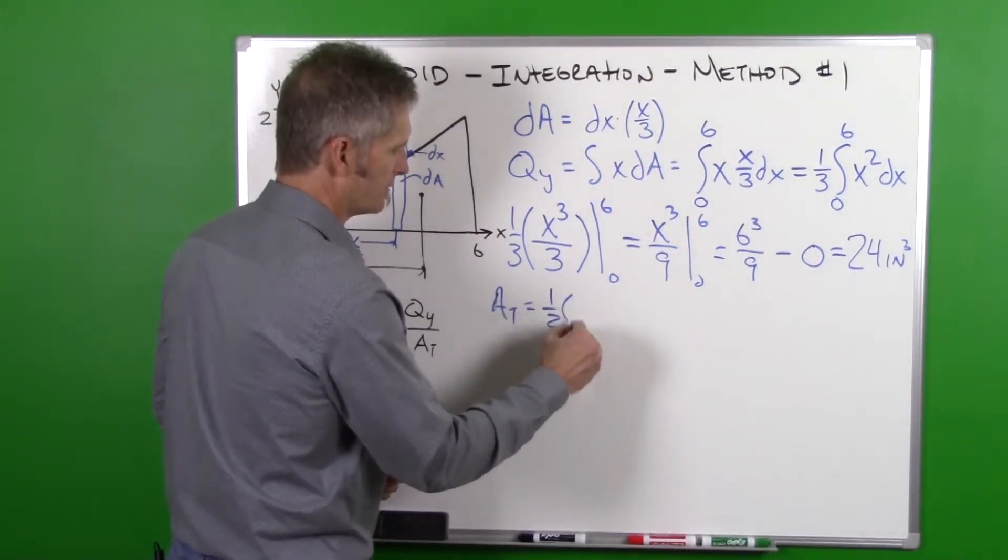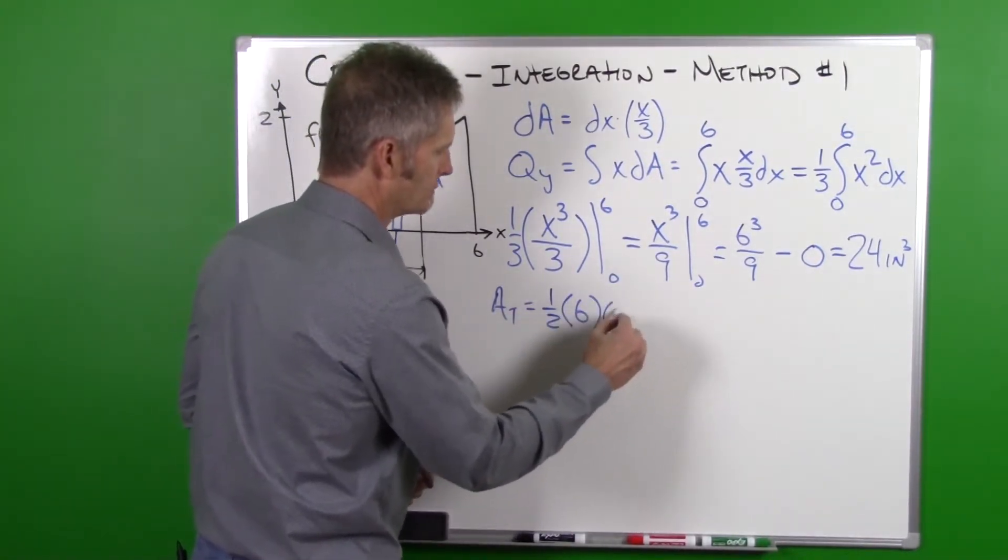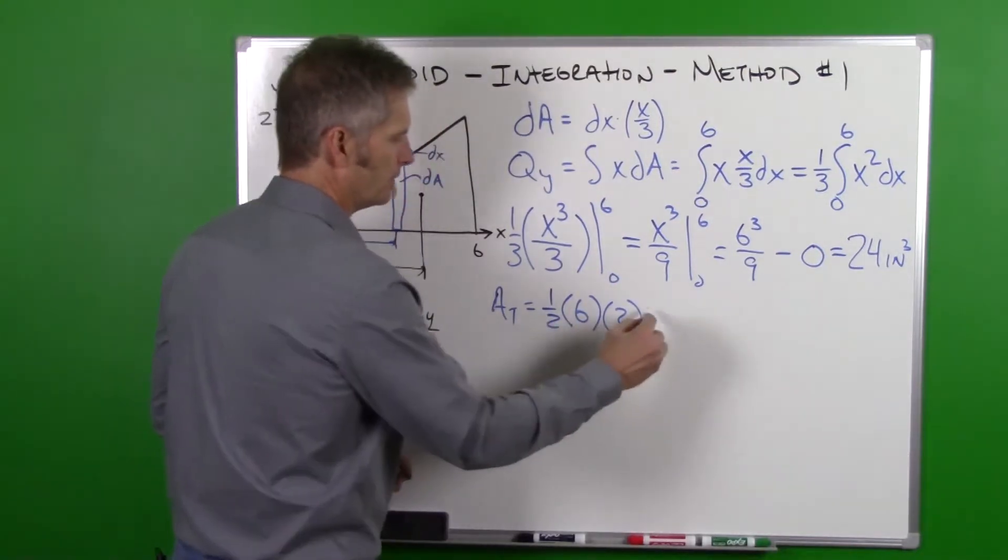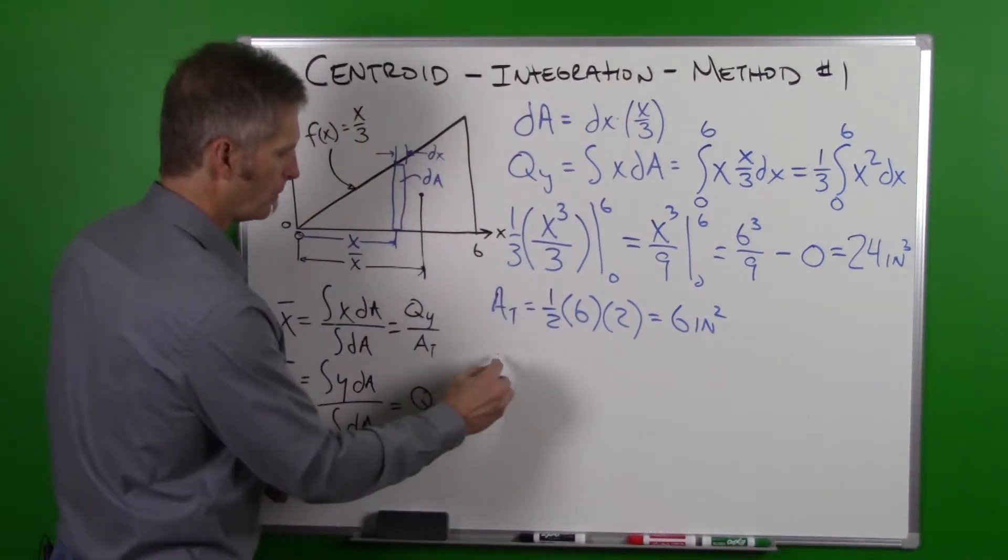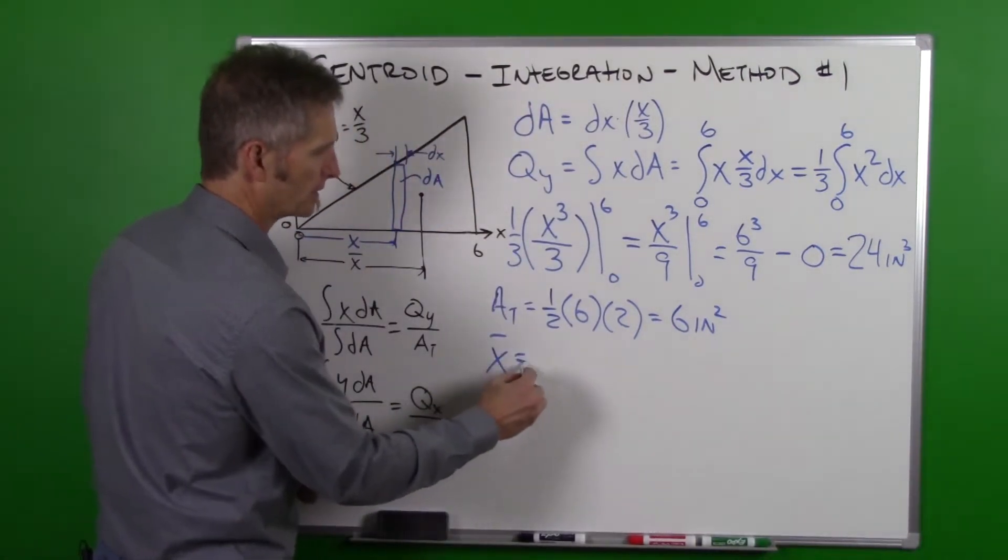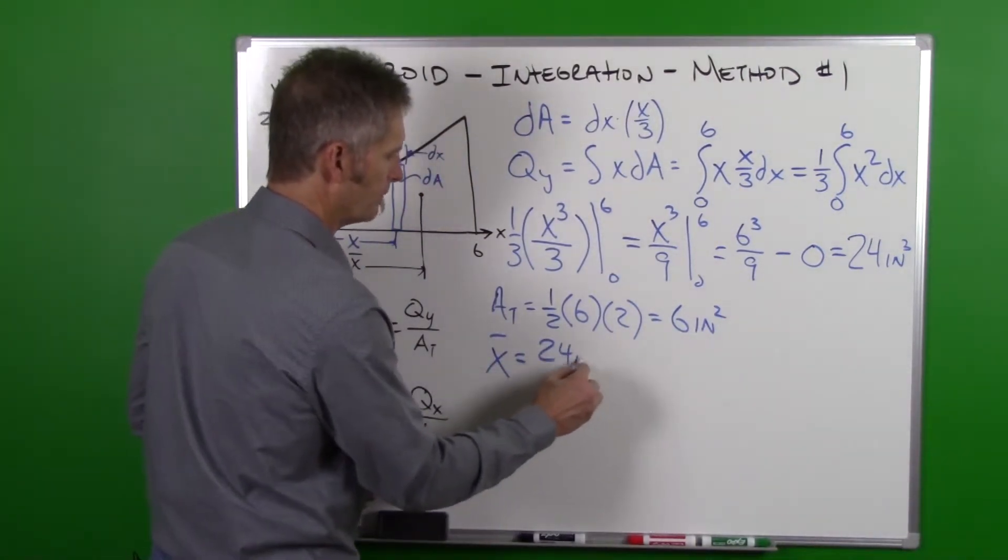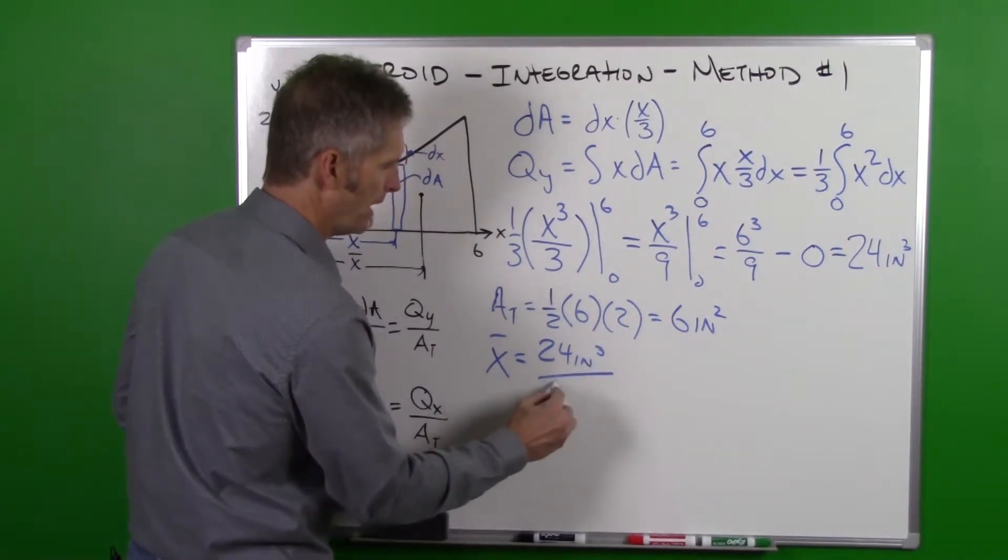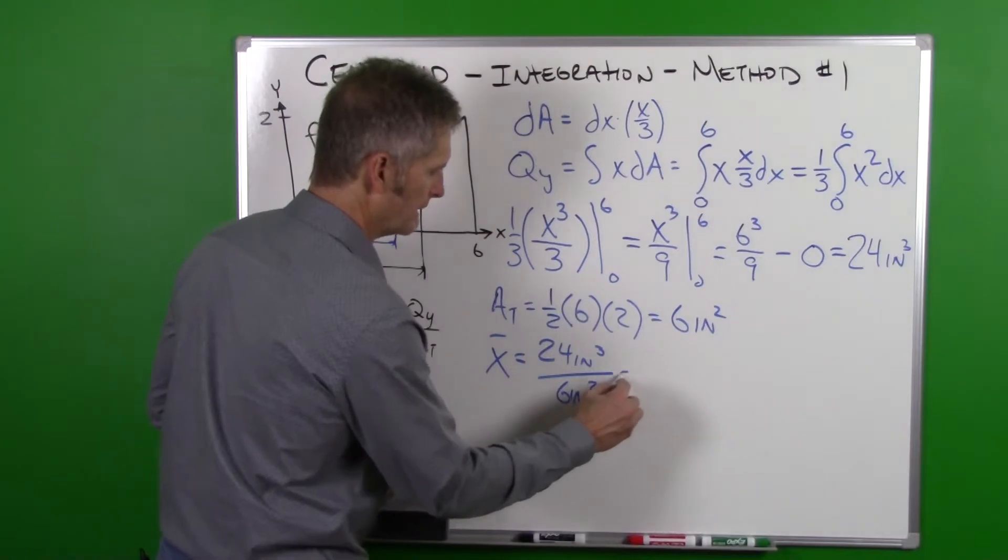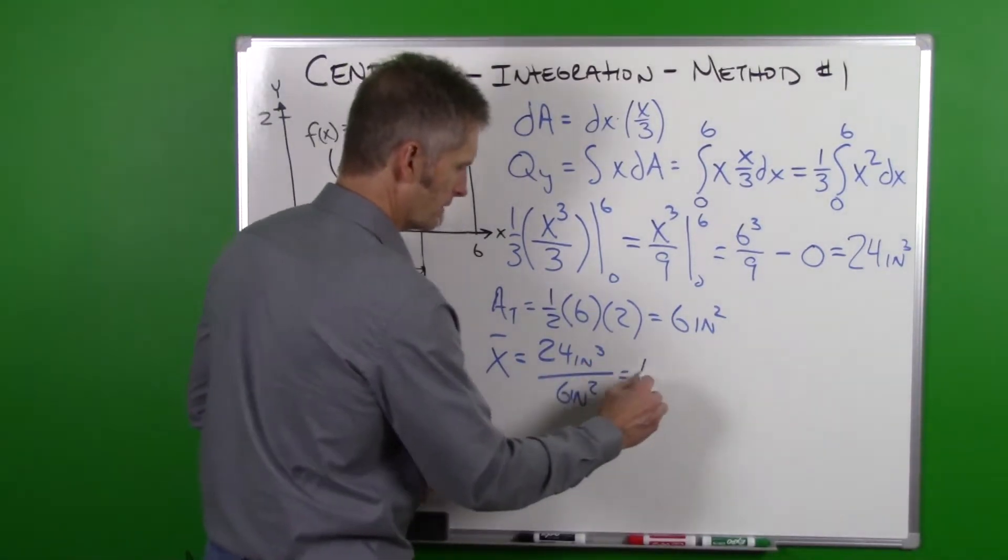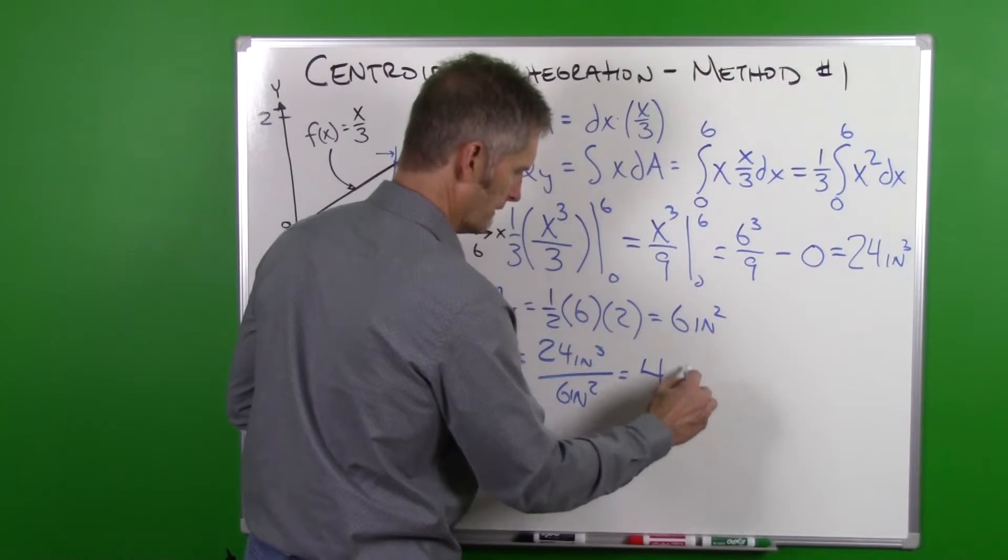So 1/2 base times height. Base is 6, height is 2, so 12 divided by 2 is 6 inches squared. Now to come up with our x bar, we plug this in so we get 24 inches cubed divided by 6 inches squared, and we end up with 4 inches.